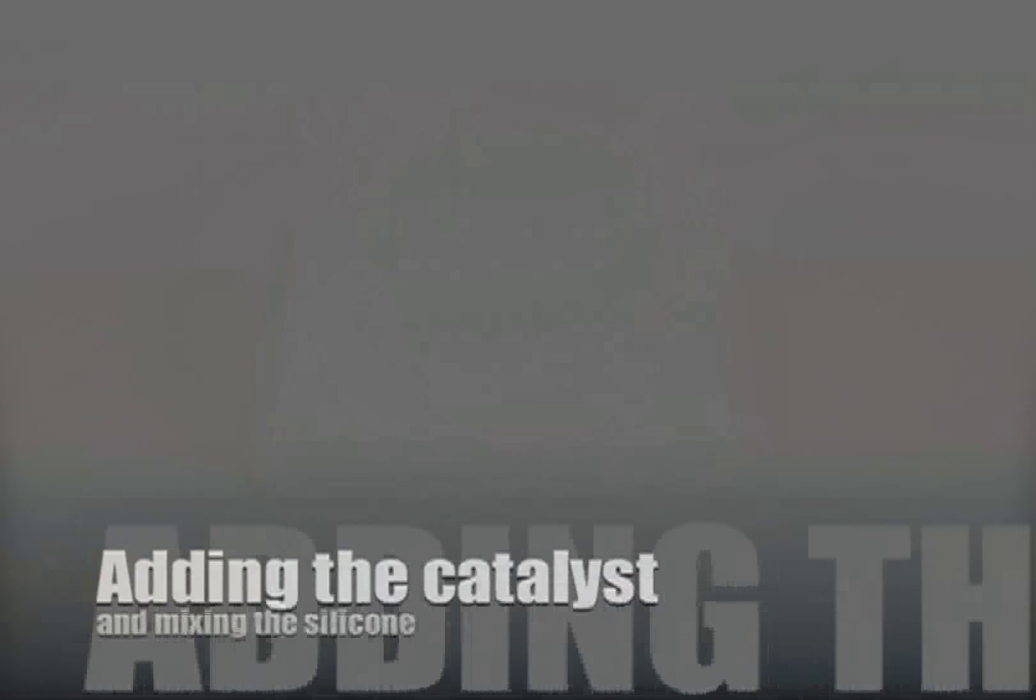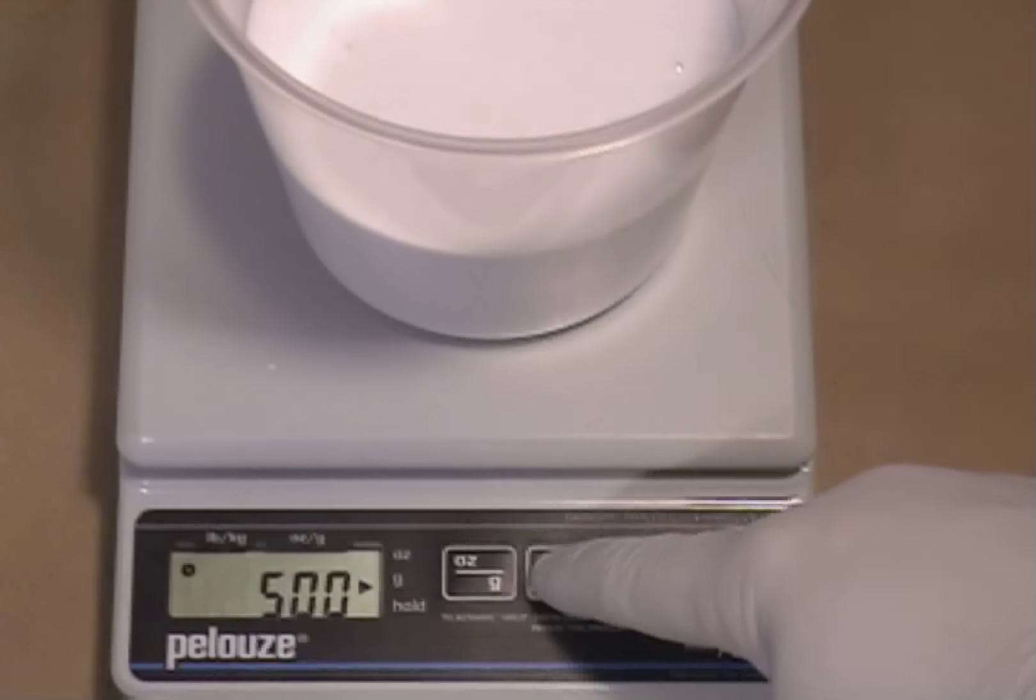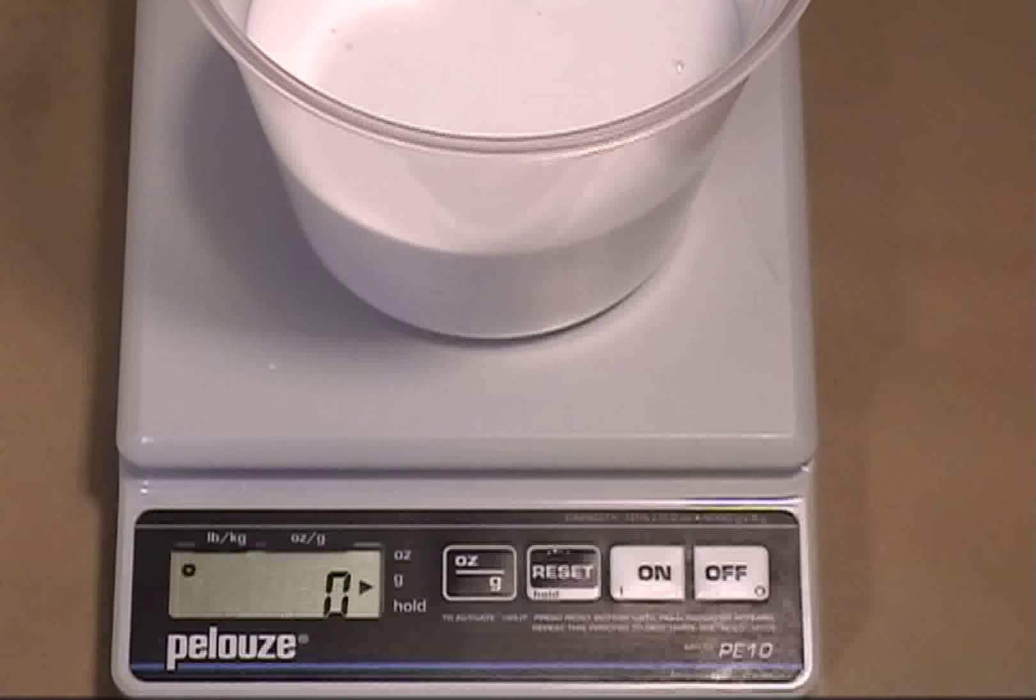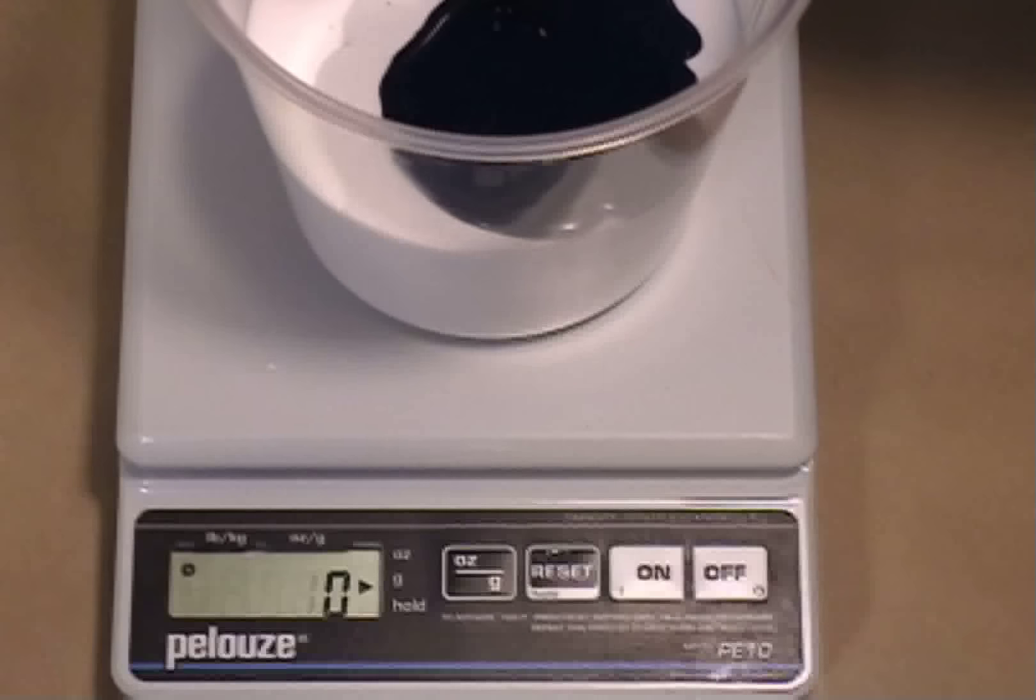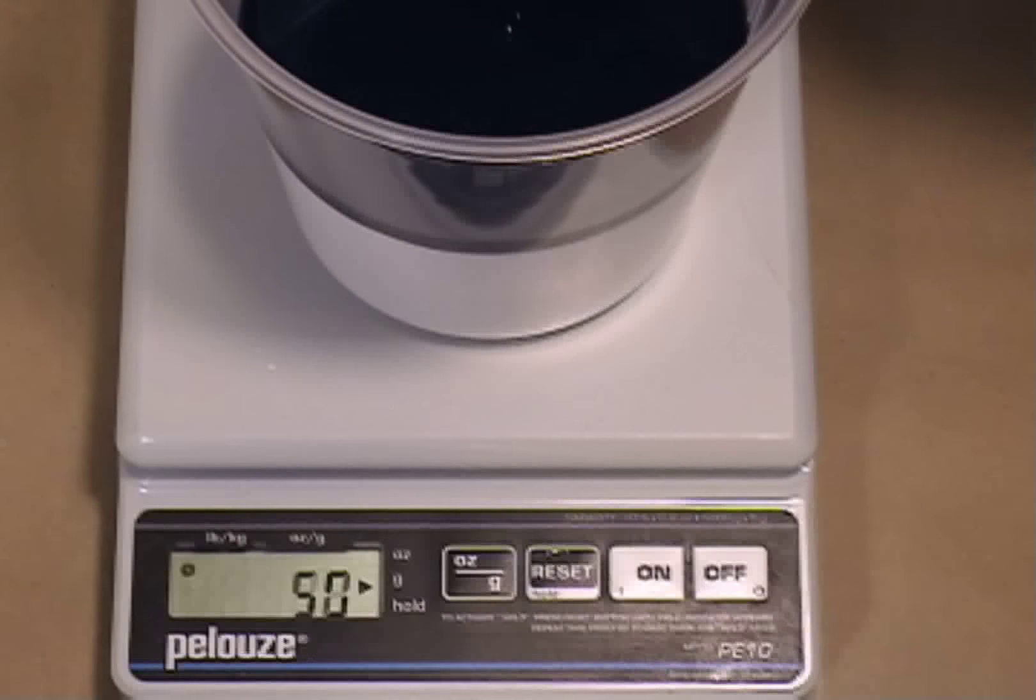Now when it comes to adding the catalyst, I've got 500 grams on my scale so I'm going to tare it out again back to zero with the silicone still on there. Now I'm going to weigh out 50 grams which is 10% of the catalyst.